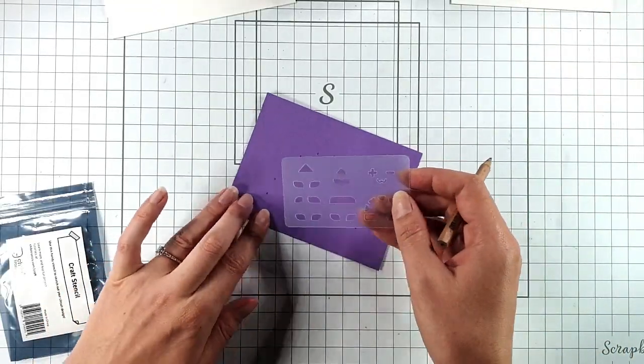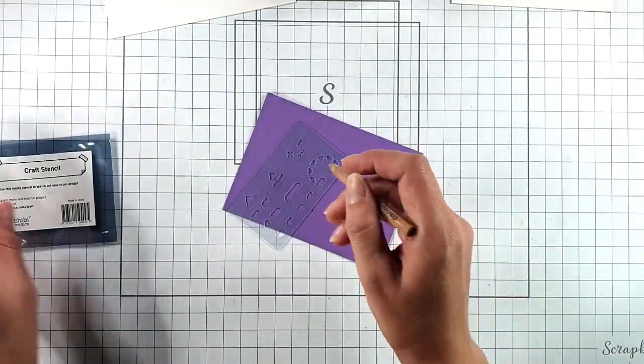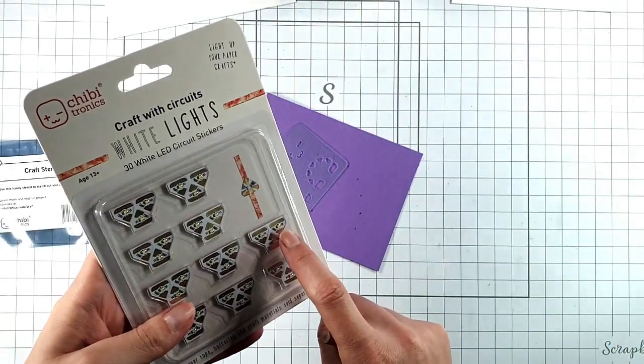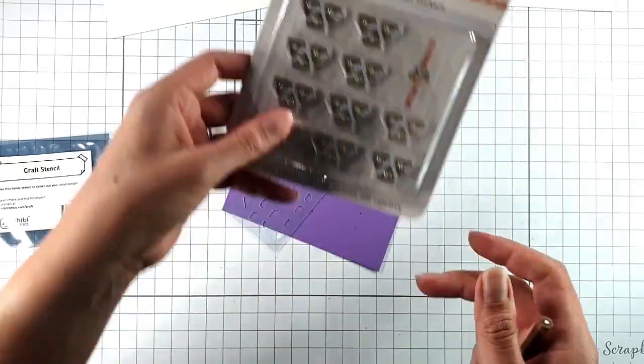I'm going to put a light behind every other heart. So I've got my craft stencil and I'm going to just trace through. This is the gap for these normal sized lights. You can see they've got a wide end and a pointy end.